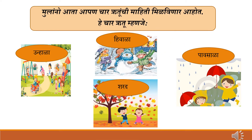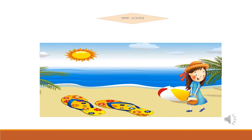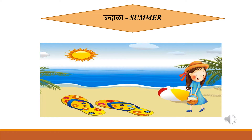Now we are going to get information about the four seasons. The four seasons are: Unala (Summer), Hiwala (Winter), Pavasala (Monsoon), and Sharad (Autumn). Unala means Summer.